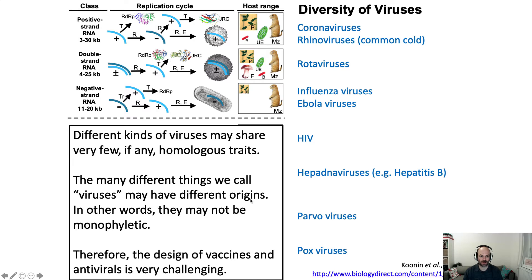So you can't possibly treat all viruses with the same drug. This also means that viruses are not monophyletic — we don't know that all viruses are derived from a common ancestor, so they may have many different origins. That's a phylogenetic explanation for why designing vaccines and antiviral compounds is a big challenge.